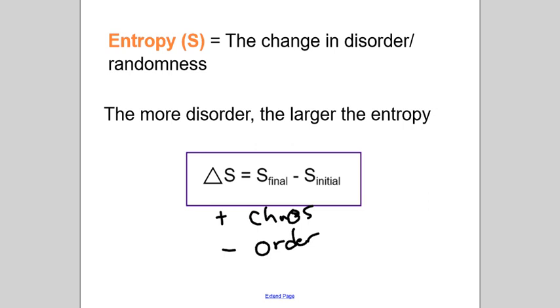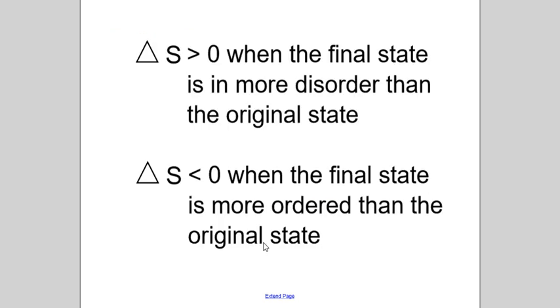And negative delta S is going to be order. So every time I talk about entropy, that's what we're talking about. And this is just looking at that same thing. Delta S, if it is a value larger than zero, then that means disorder reigns. So disorder is positive. Whereas if we go to a more ordered state, that is a negative change in delta S.